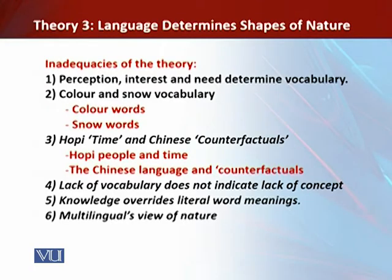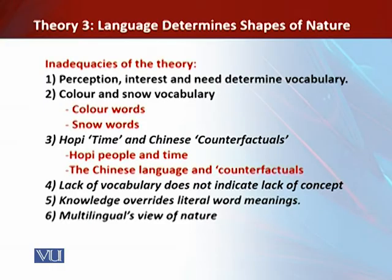The third point addresses Hopi time and Chinese counterfactuals. Hopi people and others are not different because of their language but because of their experience — deep down we are all the same. For example, Hopi people use periods relating to the harvest, the moon, the sun, and other significant events, just as English speakers do with phrases like 'when it gets dark' or 'when the weather gets warm.' Regarding Chinese counterfactuals, Chinese speakers were once thought less able than English speakers to think hypothetically about what is not true, but this was due to faulty translations. Once proper translations were made, there was no basis for claiming a difference in thinking.